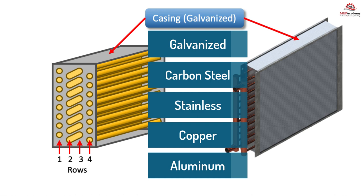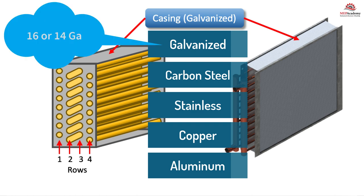Typical casing thicknesses for galvanized steel are 16 or 14 gauge. The casing is the structural support frame that holds the tubing.